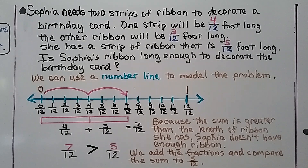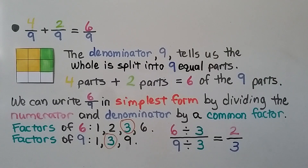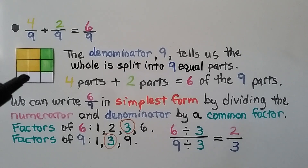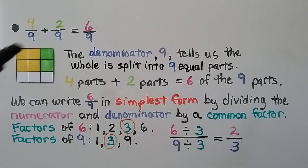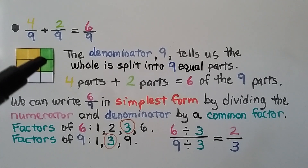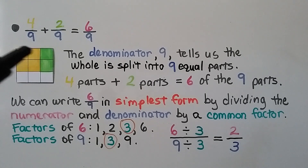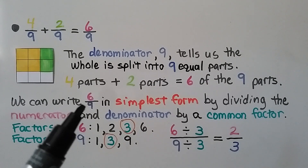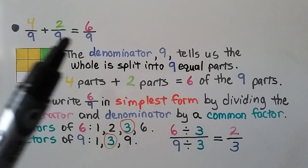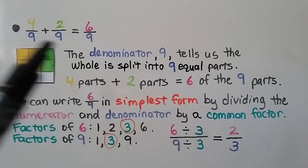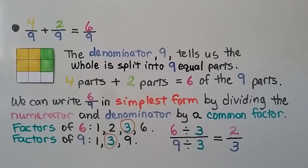Here we have four-ninths plus two-ninths. In our grid, the denominator is nine, so there are nine squares — the whole is split into nine equal parts. We have four parts and two parts, which equals six parts out of nine. We can write six-ninths in simplest form.